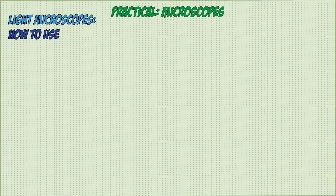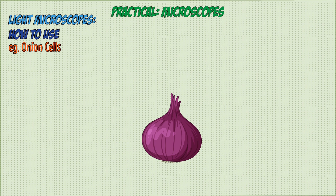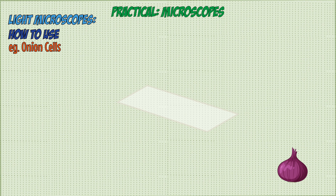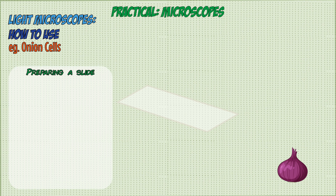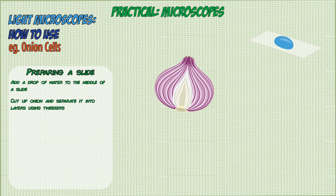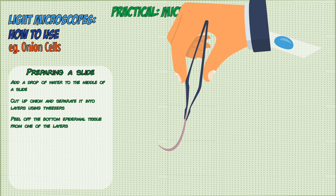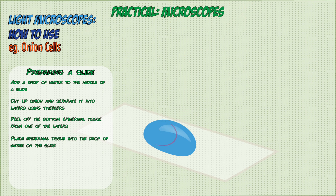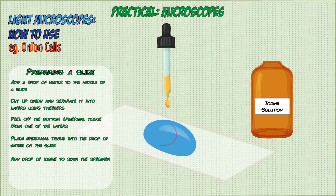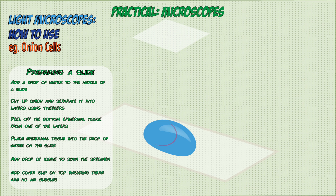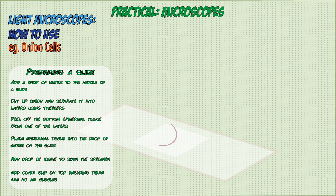To observe a biological specimen — for example, an onion cell — first add your specimen to a microscope slide, which is a strip of clear glass or plastic. Prepare the slide by adding a drop of water to the middle. Cut up the onion, separate it into layers using tweezers, and peel off the epidermal tissue from the bottom of one layer. Place the epidermal tissue into the drop of water. Then add a drop of iodine solution, which acts as a stain to add color and make the cells easier to view. Finally, carefully tilt and lower a cover slip onto the slide to avoid air bubbles.